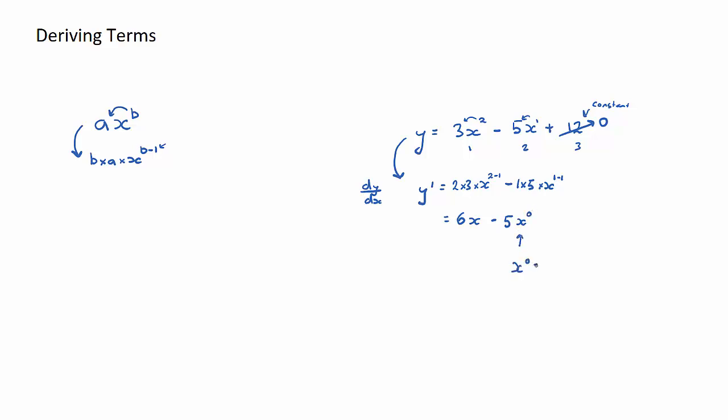x to the power of 0 is equal to 1. Anything to the power of 0 is equal to 1 - whether it's 5, 500, negative 200, or infinity. Everything to the power of 0 is equal to 1.